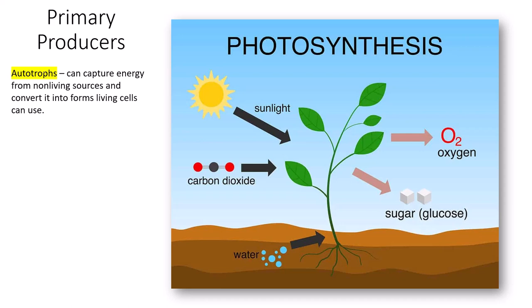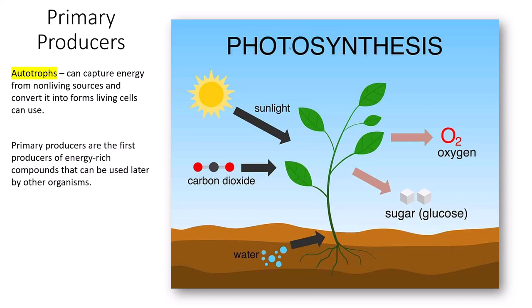What are the non-living sources of energy that they can use? Well, photo autotrophs — if we put photo in front of autotrophs — those are the autotrophs that use light. Photo is the prefix that means light. So our photo autotrophs are organisms that utilize photosynthesis to produce high energy compounds that cells can use. These would be indicative of all the plants on the planet. Primary producers are the first producers of energy-rich compounds that can be used later by other organisms, and these high energy or energy-rich compounds are always carbohydrates.